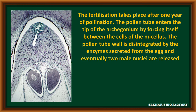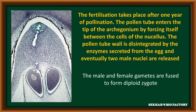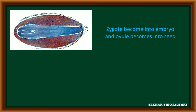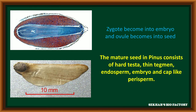Fertilization takes place after one year of pollination. During this time, the pollen tube enters at the tip of the archegonium by forcing itself in between the cells of the nucellus. The pollen tube wall is disintegrated with the help of enzyme secretion and the male gametes are released into the archegonium for fertilization. Both male and female gametes fuse to form a diploid zygote. The zygote later becomes an embryo inside the ovule, and the entire ovule becomes a seed. A matured seed in Pinus consists of a hard testa and thin tegmen, with endosperm, embryo and a cap-like perisperm inside.